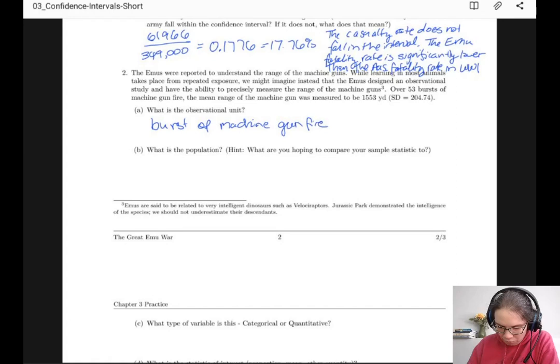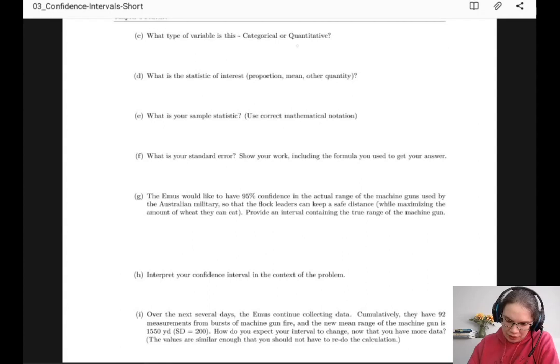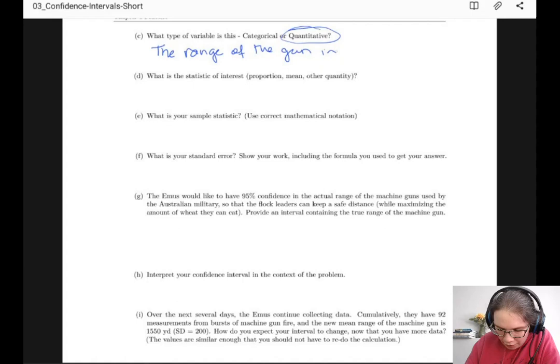Okay, the population is the machine guns used in the Great Emu War. And this is a quantitative variable. Specifically, we're looking at the range of the gun in yards.